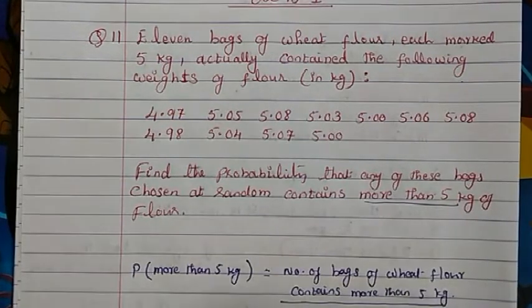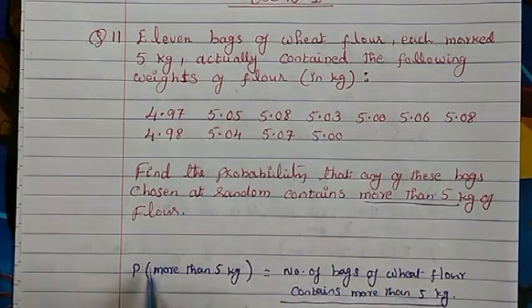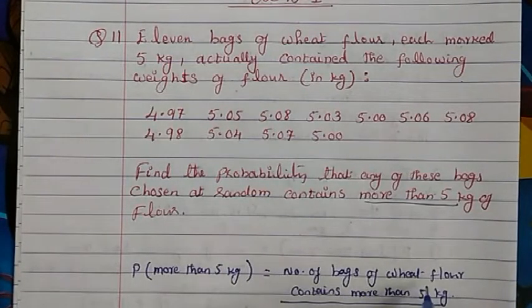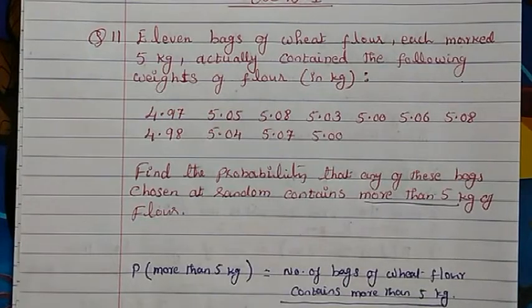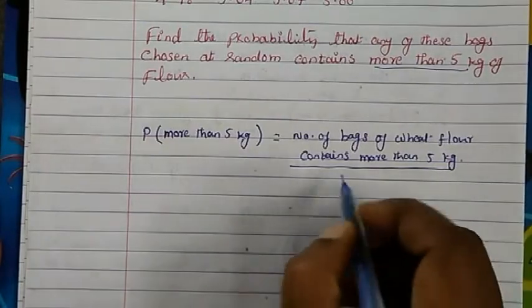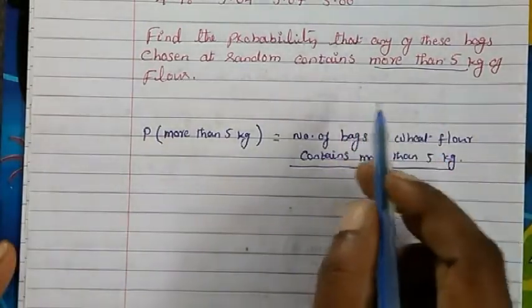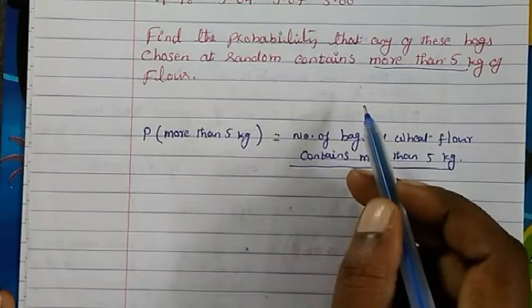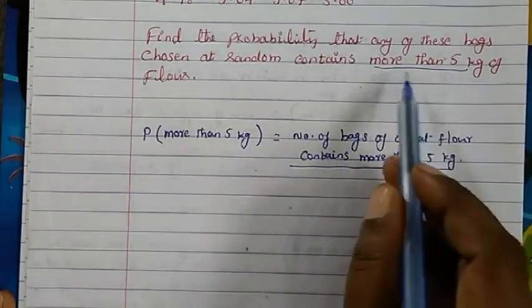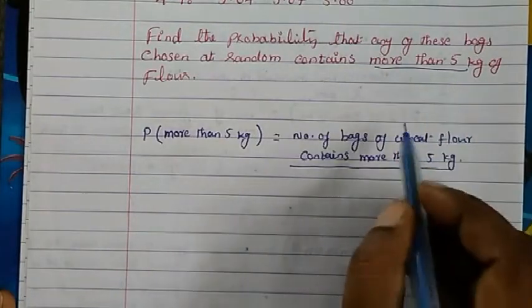Actually you don't need to make the formula like this. You can also refer to the general formula, which is probability P(E) equals number of trials event has happened divided by the total number of trials. You can follow the general formula also. If you write this way it is more clear to you. So you can write either general formula or this formula. Number of bags of wheat flour contains more than 5 kg, we have to find the probability for that.